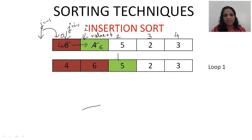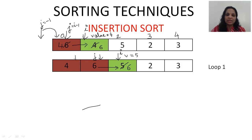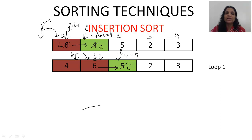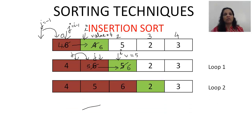Next, i has moved to index 2, so we're considering element 5 — value is now 5, j starts at index 1. Is 6 greater than value 5? Yes — shift 6 to its right, so this position becomes 6. Decrement j. Is 4 greater than 5? No — so 4 does not shift. Where should 5 go? At j+1 location — so we put the value of 5 there. Didn't 5 get inserted at the correct location? That's the result of pass 2.